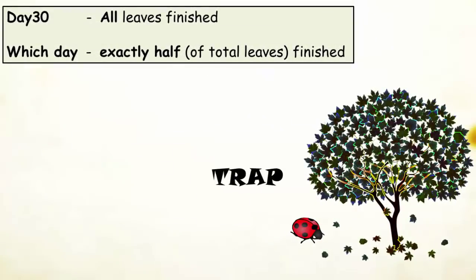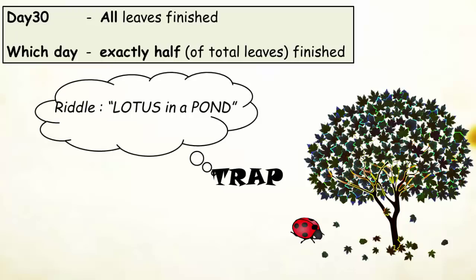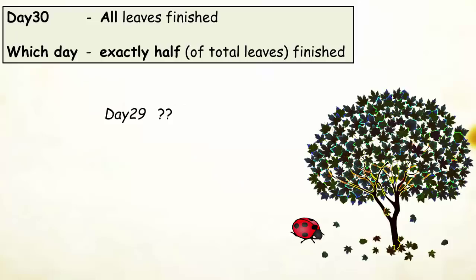It's an interview trap and people who know lotus in a pond riddle are highly expected to fall for this trap. So, if your answer is 29th day, then you have been successfully trapped because 29 is an incorrect answer.